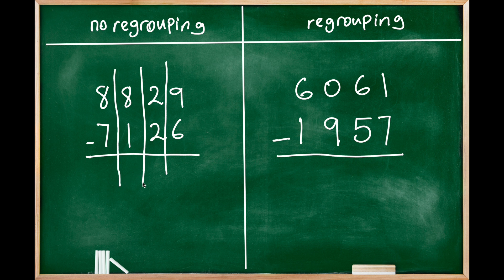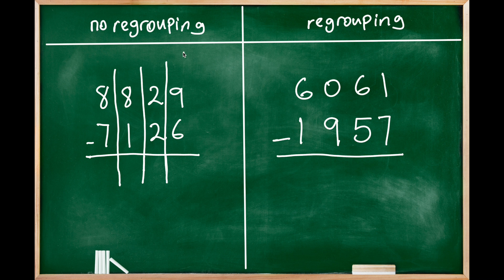We start always with the ones digit, so we do subtracting the ones digit: 9 minus 6, three. So it's one digit, so we don't need to do anything. And we always check the bottom number is smaller than the top number. If it's bigger, then we need to do regrouping, so we'll come to that.